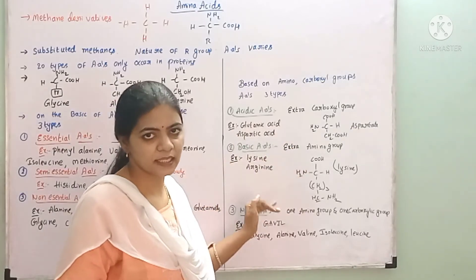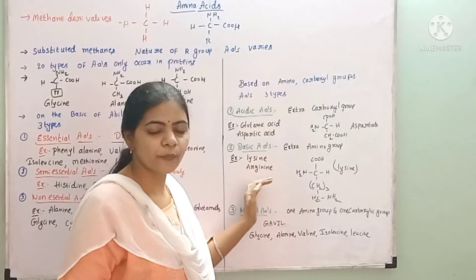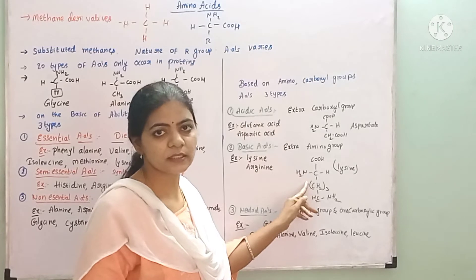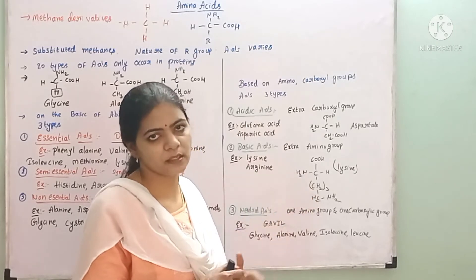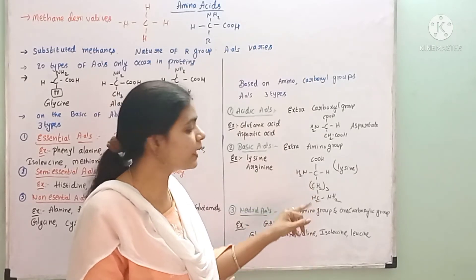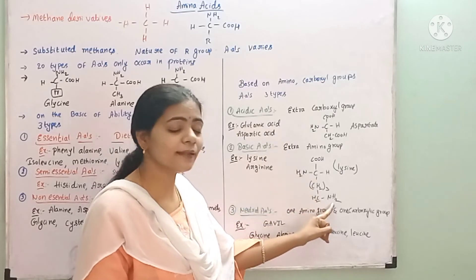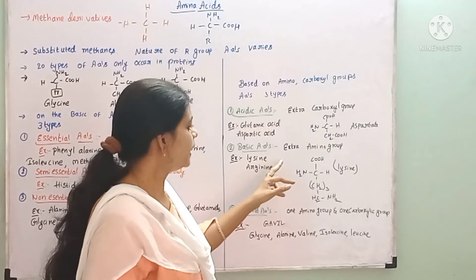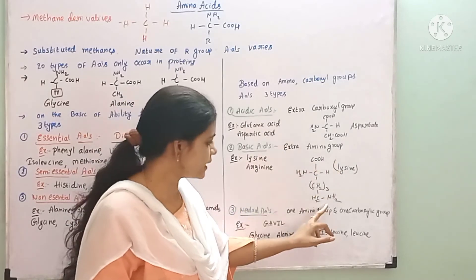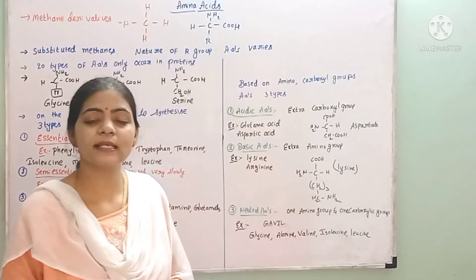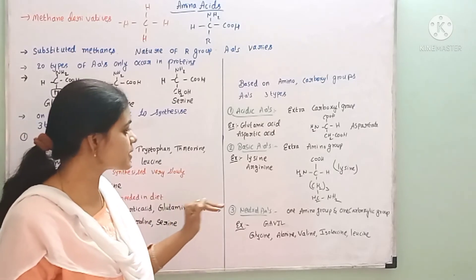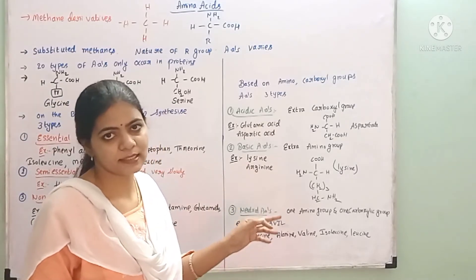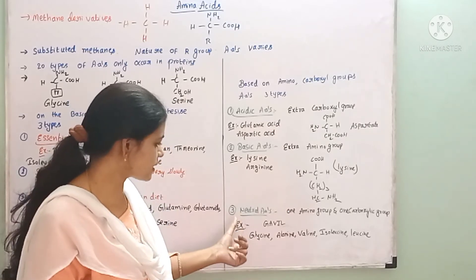In basic amino acids, the amino group provides basic character. In addition to the normal amino group, an extra amino group is present, making the amino acid more basic. Examples of basic amino acids are lysine and arginine.